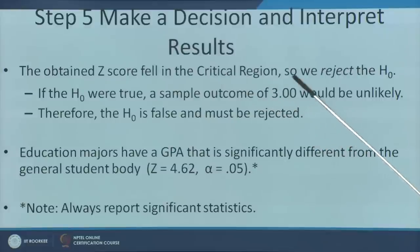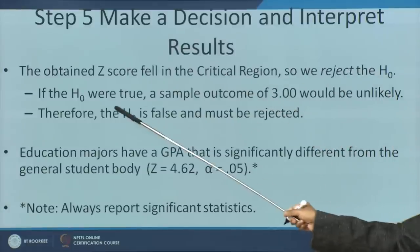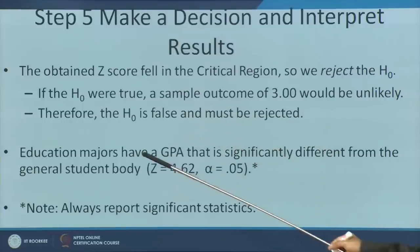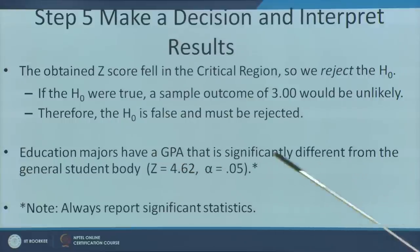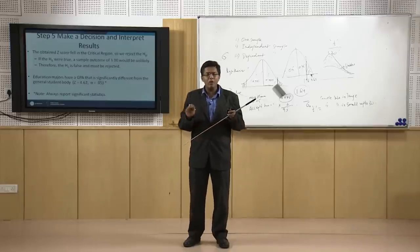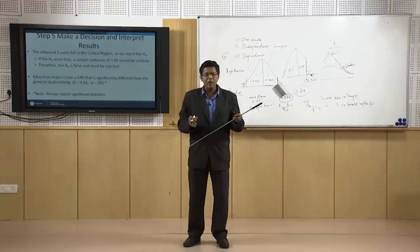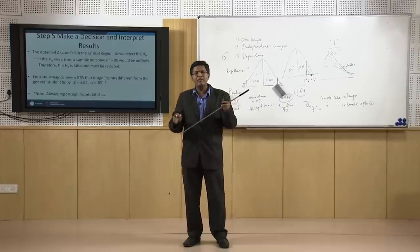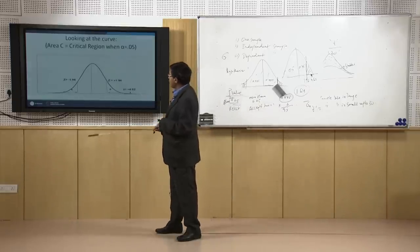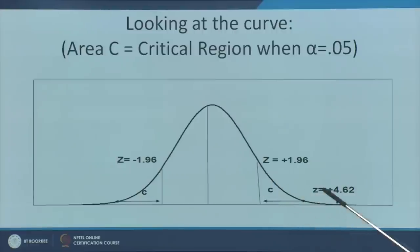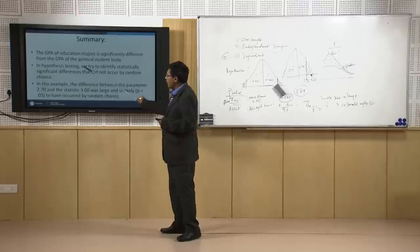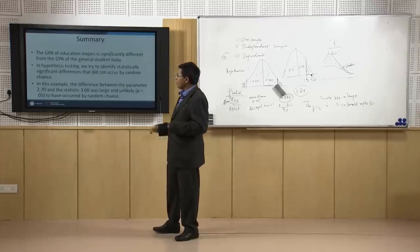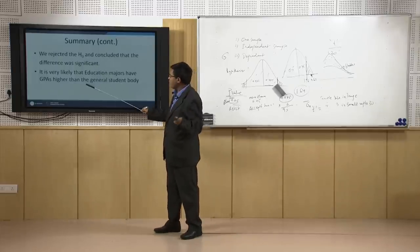The obtained Z-score of 4.62 fell in the critical region, so we reject H0. If H0 were true, a sample outcome of 3.0 would be extremely unlikely. Therefore H0 is false and must be rejected. The conclusion: education majors have a GPA that is significantly different from the general student body — confirming what the researcher wanted to show.